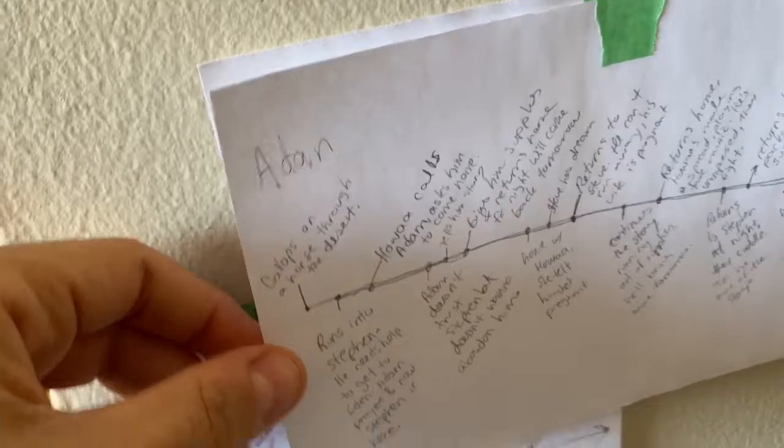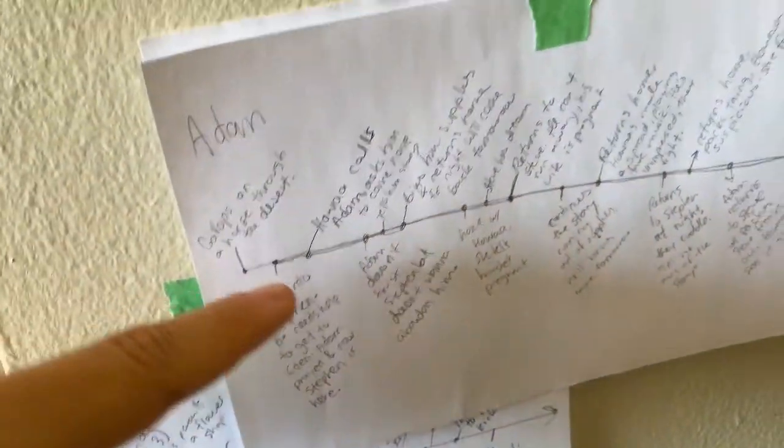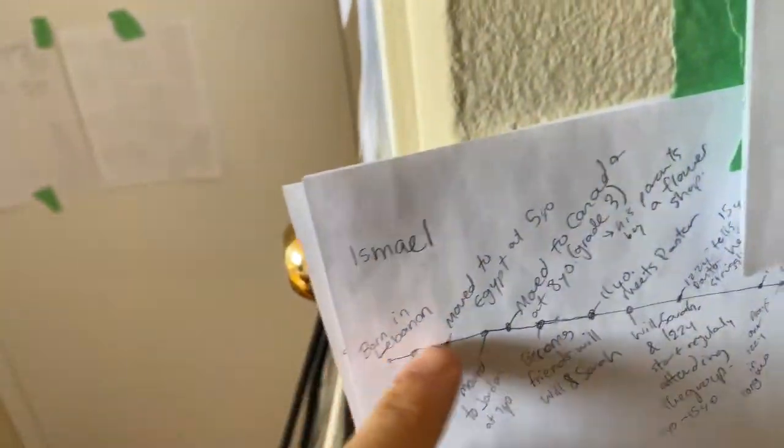I sometimes draw different things to map it out geographically, and then eventually what happens is that I make a timeline — a chronological timeline of what is happening to the characters.